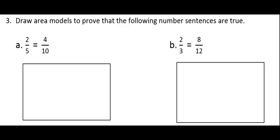In the last section, I'm going to use the area models to show that the number sentences are true. The first problem says 2 fifths is equal to 4 tenths. I'll start by dividing the fraction model into 5 equal pieces, and I will shade in 2 of those pieces. Here are my 2 fifths.